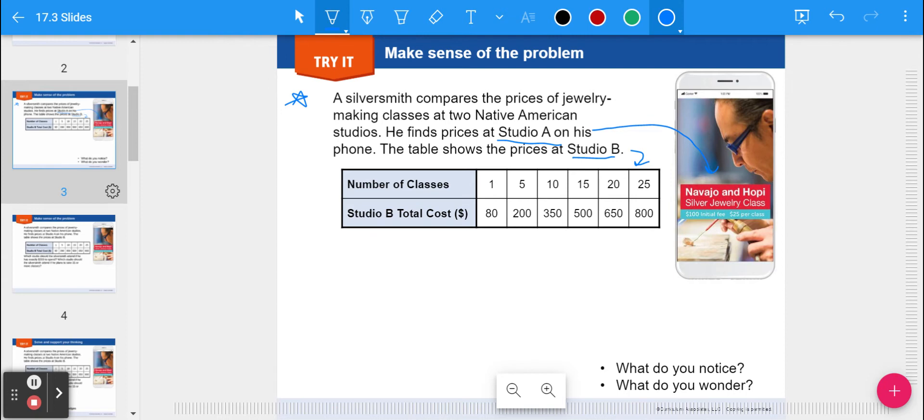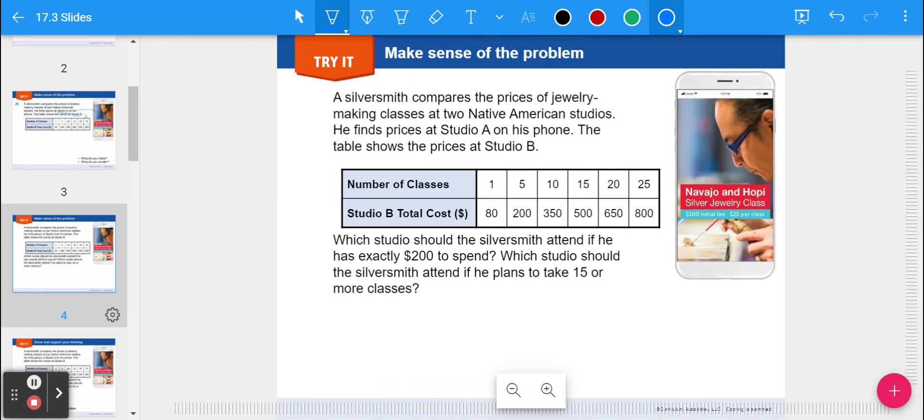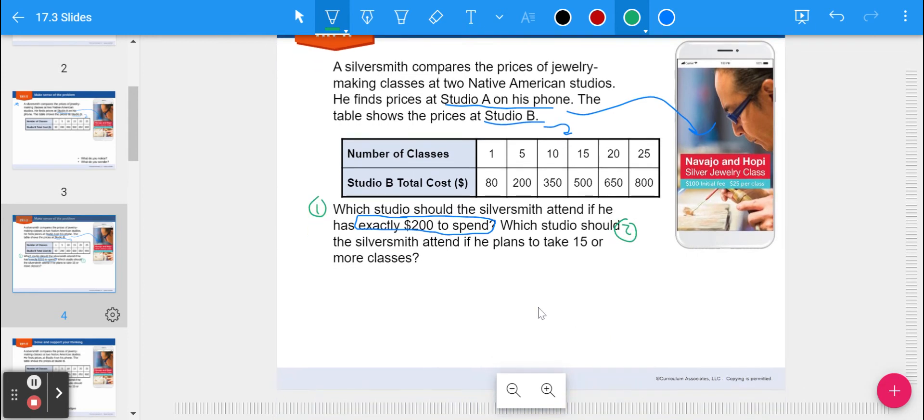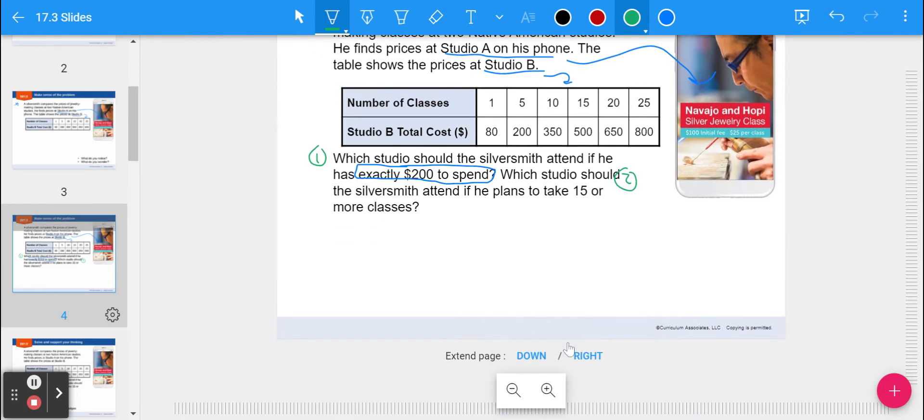I think the one on the phone is a little easier to figure out your initial value and rate, but you can definitely figure it out from the table. Now, the question asks, which studio should the silversmith attend if he has $200 to spend? So exactly $200, can't go over. Which studio? Studio A, which is on the phone, or Studio B, which is shown right here? Which studio should the silversmith attend if he plans to take 15 or more classes? So let's answer those.